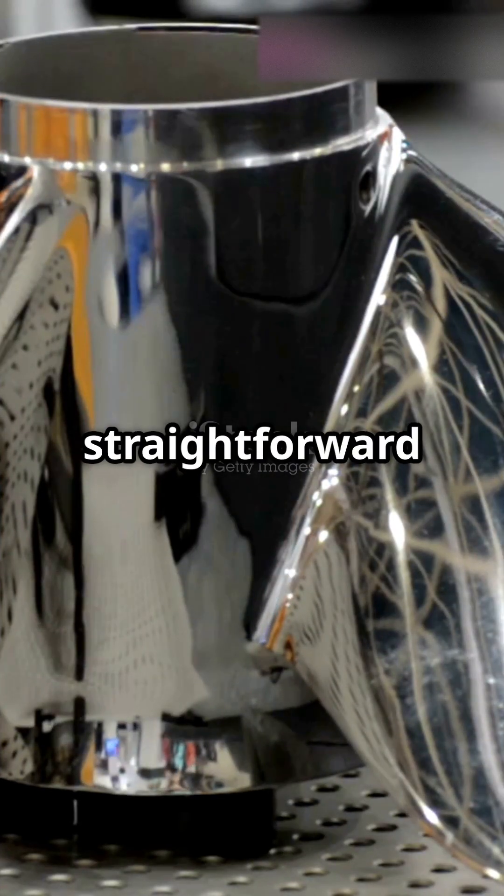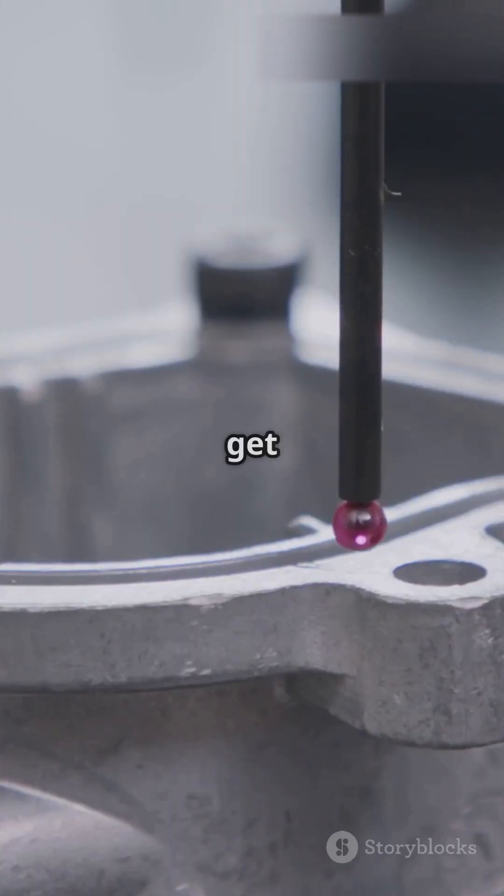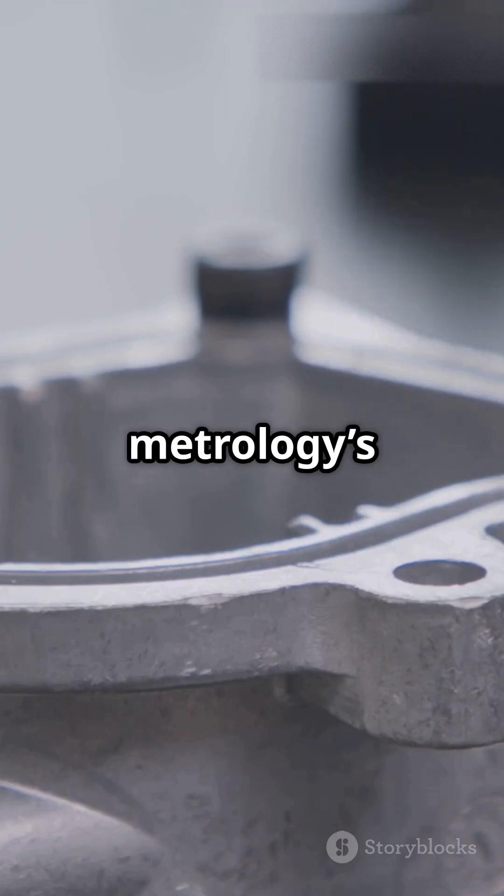Conventional metrology is great for straightforward tasks. It's quick, easy, and gets the job done for basic measurements. But when precision is key and the shapes get tricky, coordinate metrology is your go-to.